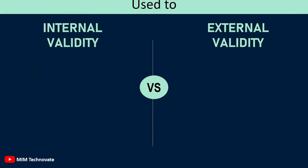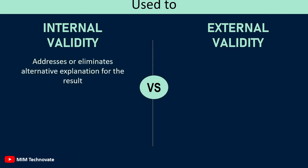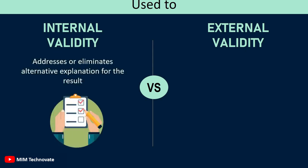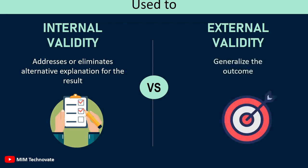Internal validity either addresses or eliminates alternative explanations for the result, whereas external validity is used to generalize the outcome.